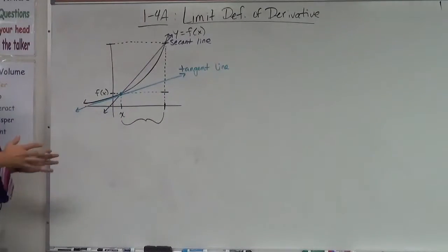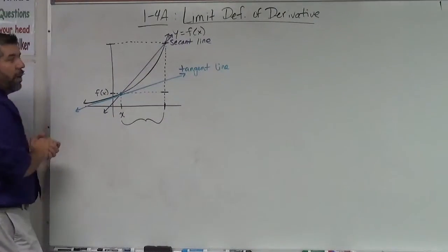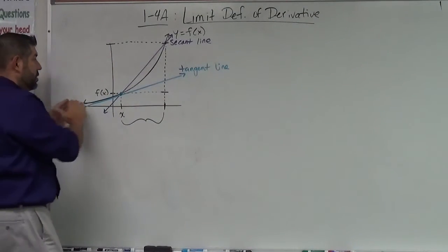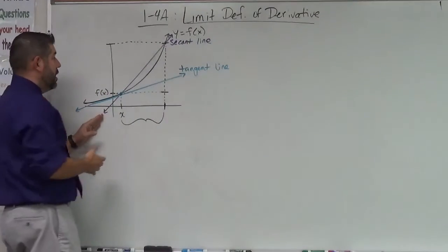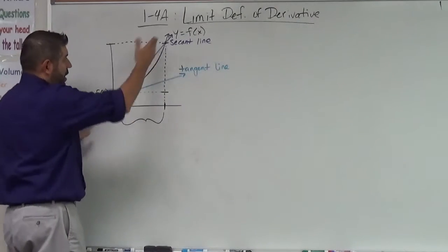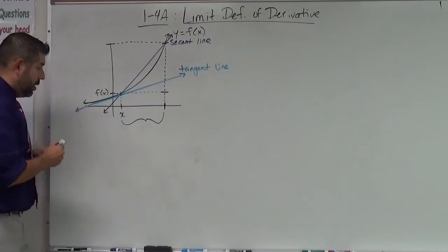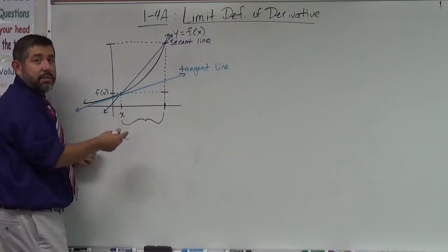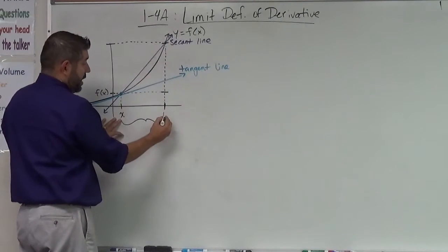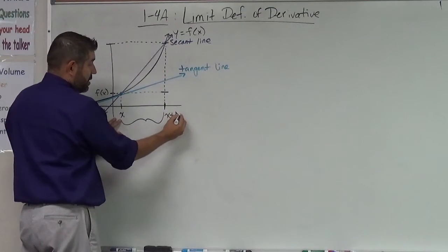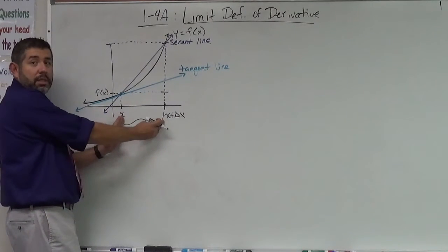I've got this picture here, and let me describe it real quick. I've got a function, and this function is just some function y equals f of x. On this function I have two lines. I have the secant line, which is any line that crosses through two points. And I have the tangent line, and I'm going to put that point on the same place as that secant line. That point is going to be at an x value of x. And then this value where the secant line ends is going to be x plus delta x, because that's the change in x from this point to this point.